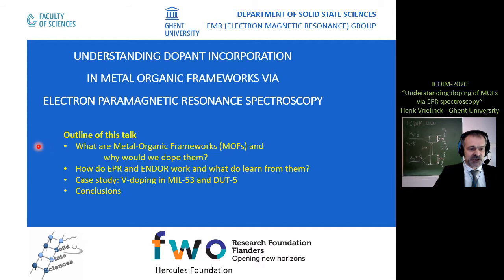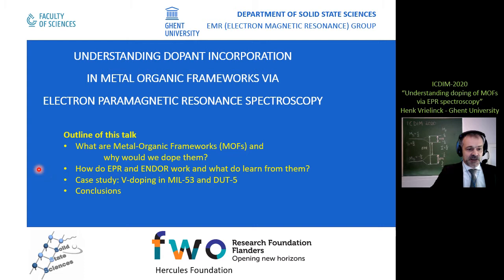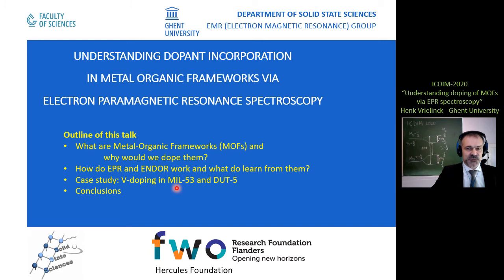First of all I will tell you what metal organic frameworks are, what their applications are, why we would be interested in doping them and what the specific structures are that we have been studying. Afterwards I will tell you how electron paramagnetic resonance EPR and electron nuclear double resonance ENDOR work and what we can learn from them. Then I will move to a case study of vanadium doping in MIL-53 and in a structurally related framework DUT5. I will show you that in MIL-53 single site doping occurs, whereas in DUT5 multiple dopant sites occur. I will end with a few conclusions.